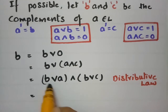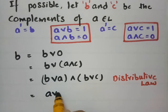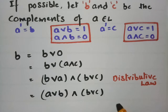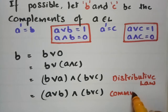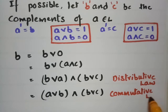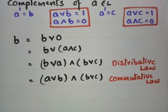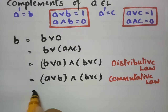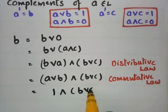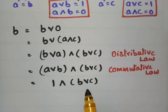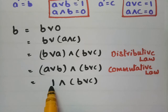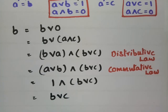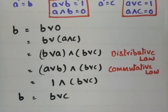According to the commutative law, B join A can be written as A join B. So we have (A join B) meet (B join C). Now, A join B equals 1 since the complement of A equals B. So this becomes 1 meet (B join C). Meet is the greatest lower bound, and since 1 is the greatest element, the result is B join C. Therefore, B equals B join C.